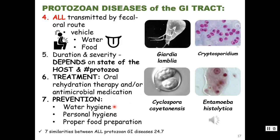Prevention is going to be good water hygiene. Whenever there is fecal contamination of a water source, that's when you get transmission of these diseases. Water treatment — chlorination, filtration, boiling — is key. Personal hygiene stops hand-to-mouth transmission, and proper food preparation and cooking foods also helps.